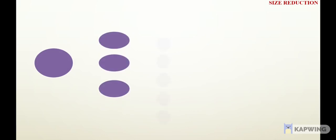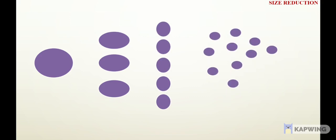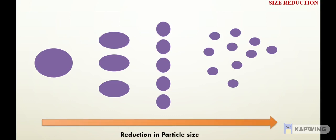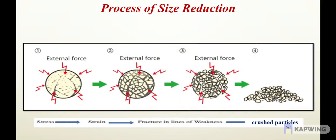Size reduction is the operation carried out for reducing the size of bigger particles into smaller ones of the desired size and shape with the help of external forces. It is a process of reducing large solid unit masses into small unit masses or coarse particles or fine particles. In many food processes, it is frequently necessary to reduce the size of solid material for different purposes.